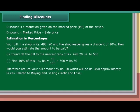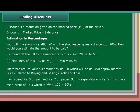Price related to buying and selling, profit and loss: I will spend Rs. 3 on a pen and Rs. 2 on paper, so my expenditure is Rs. 5. This gives me a profit of Rs. 3, which is 3 upon 10 into 100, equal to 30%.